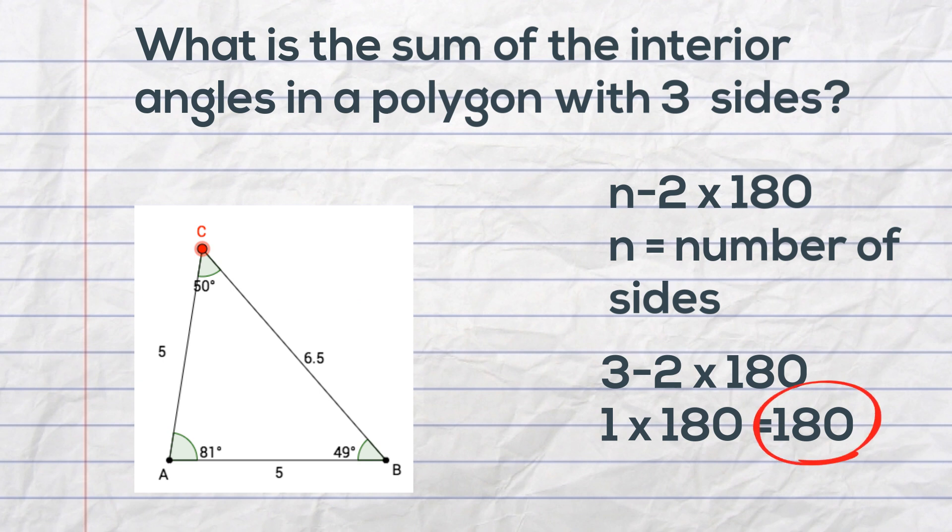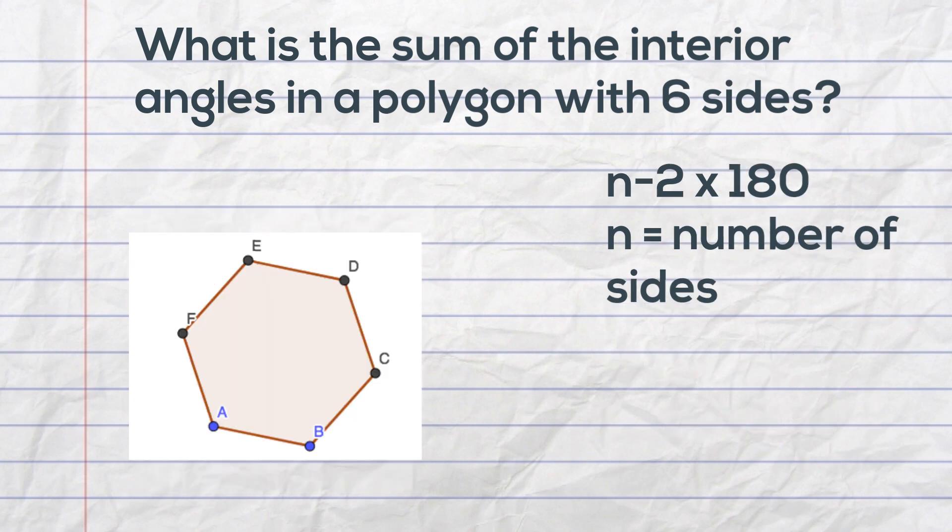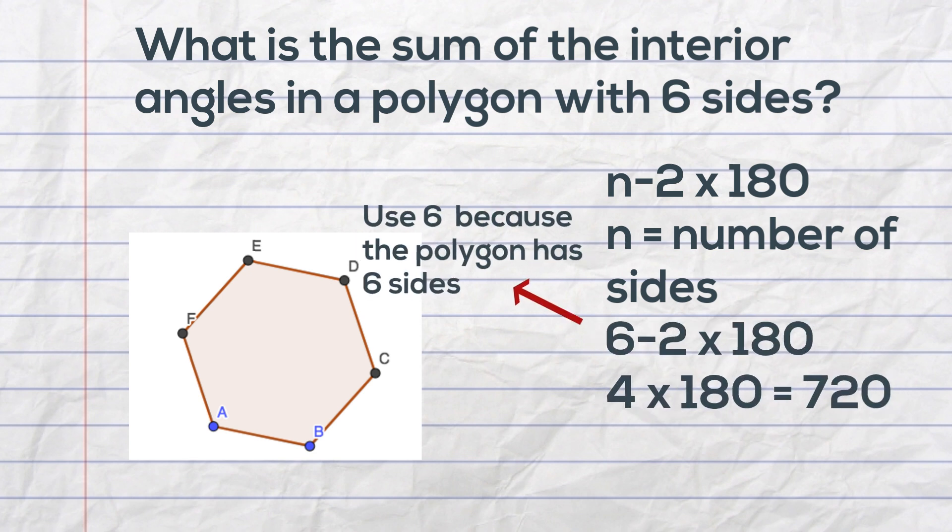Let's move on to one a little more challenging. Next, what is the sum of the interior angles in a polygon with 6 sides? Well, n will equal 6, so we have 6 minus 2 which is equal to 4, and 4 times 180 is 720 degrees.